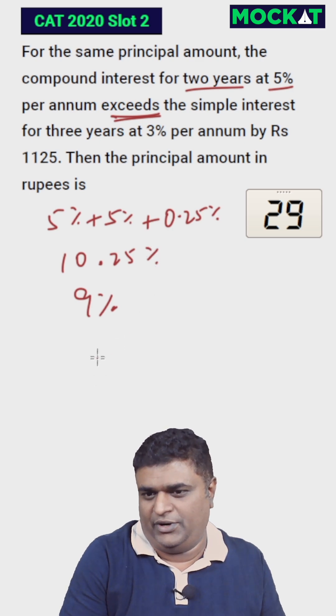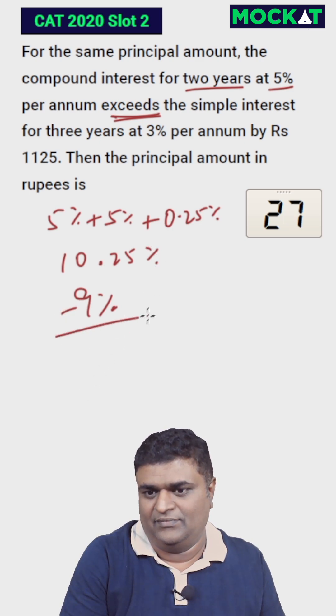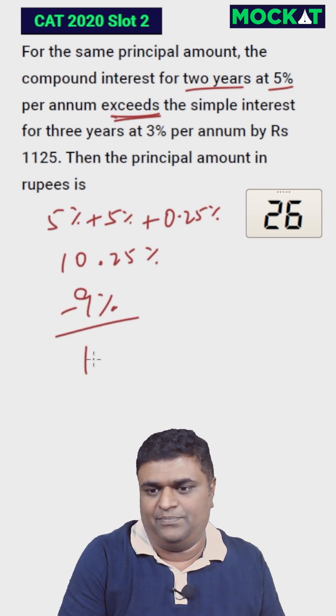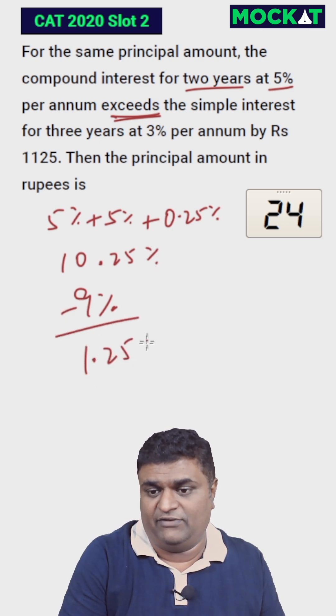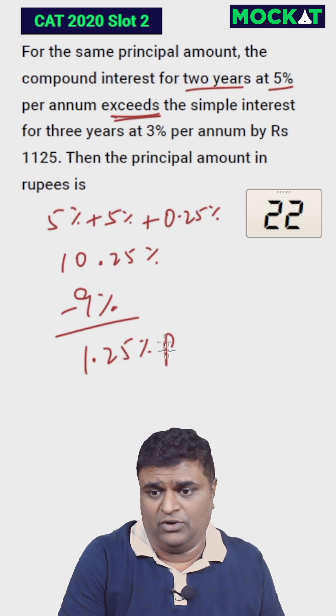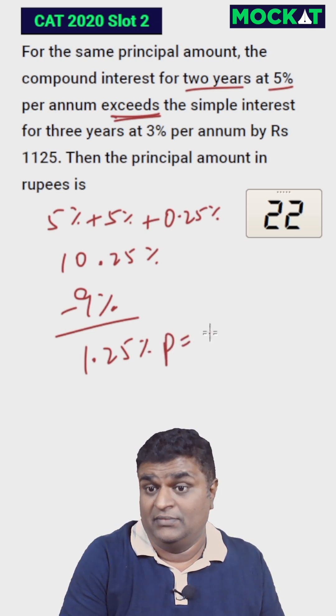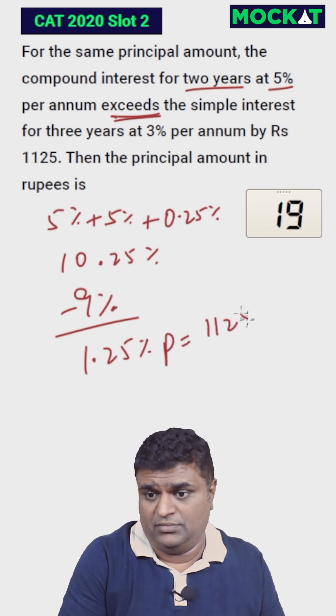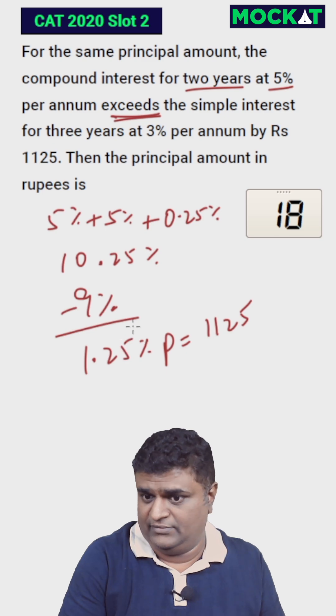That's a total of 10.25%. Subtract the 9%, you're going to get 1.25% of the principal equals 1125.